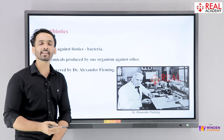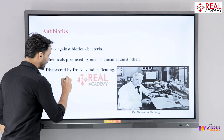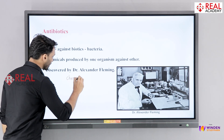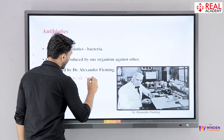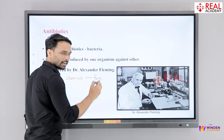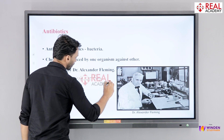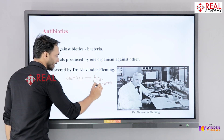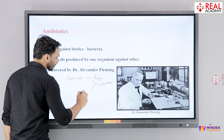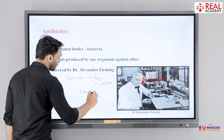Now let's understand how those living organisms are killed, or how these chemicals are prepared first. An antibiotic is nothing but a simple chemical. These chemicals are prepared by fungi. Even certain bacteria can prepare them. After fungi and bacteria prepare these chemicals, those chemicals end up killing bacteria.